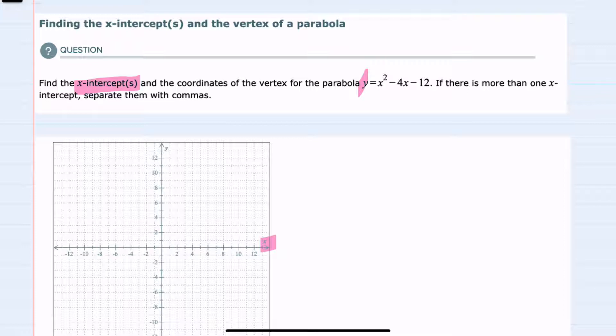We can take the formula for our parabola, set y equal to 0, and from here we can solve for x by first factoring the quadratic on the right-hand side. Since the leading coefficient is 1, we know that this will factor with an x and an x.